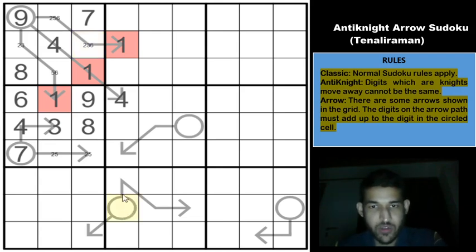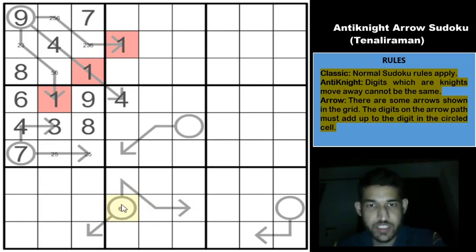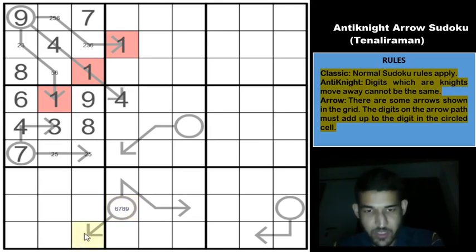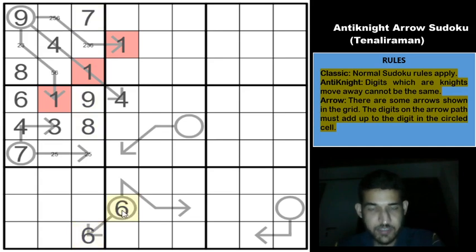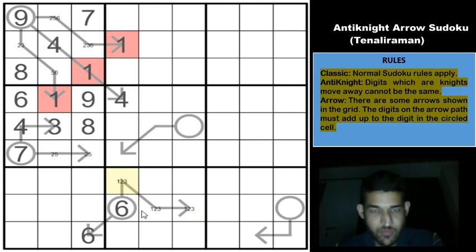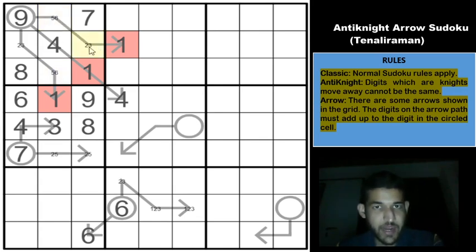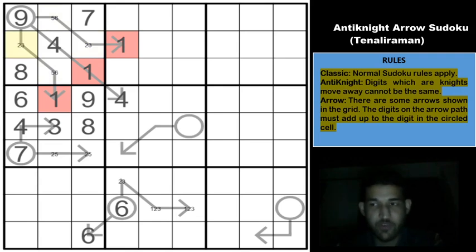Looking at this arrow circle: the minimum sum along the three-cell stem is 1+2+3=6. So the circle can be 6, 7, 8, or 9. But 7, 8, and 9 cannot appear in column 3, so this must be a 6. With the circle being 6, those three stem cells must contain 1, 2, and 3 — the only way to sum three distinct digits to 6. Since 1 cannot appear in the top cell, that must be 2 and 3, with 1 in one of the other two cells.